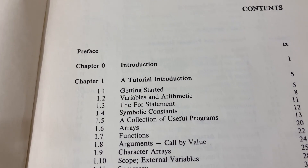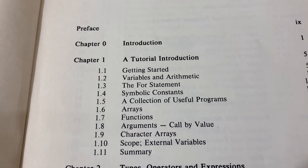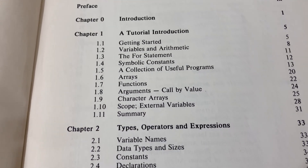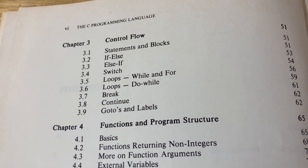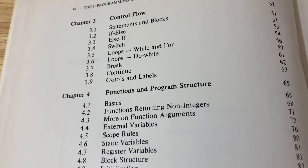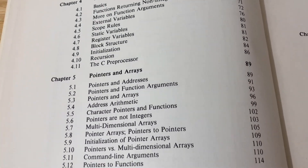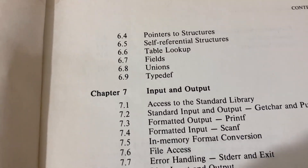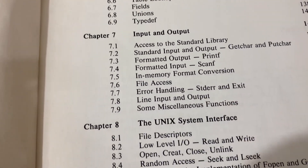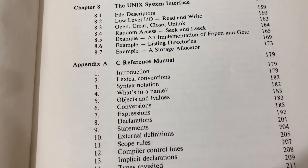Let's just go through the contents, and then we'll take a look inside the book. It starts off with an introduction, and then a tutorial introduction, types, operators, and expressions, control flow — things like if statements — functions and program structure, pointers and arrays, structures, input and output, the Unix system interface, and then the C reference manual.